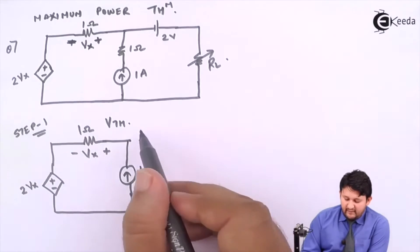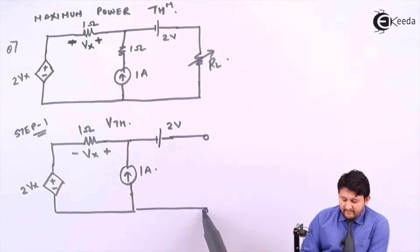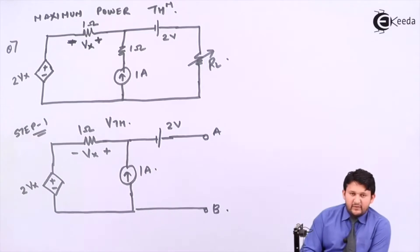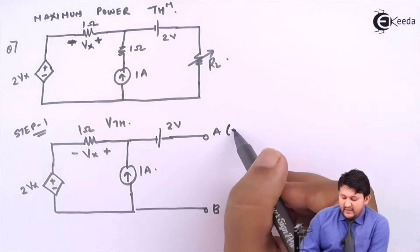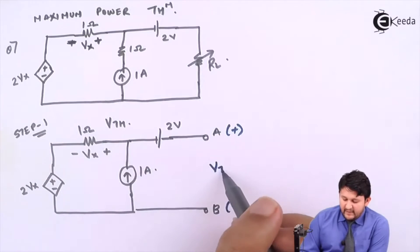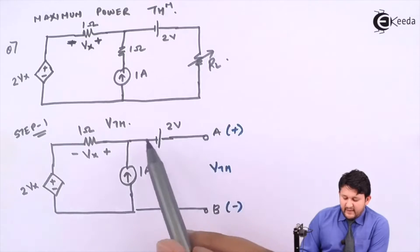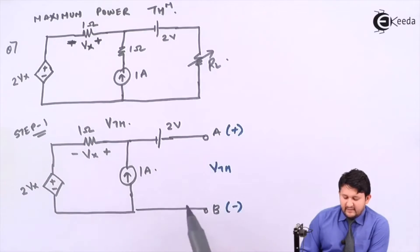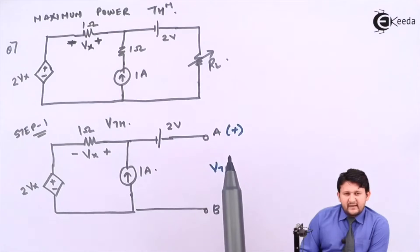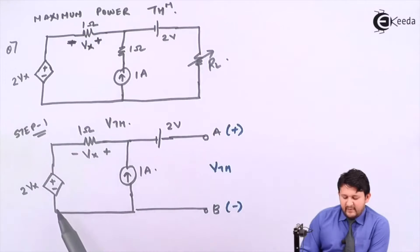The value is 1 ohm, voltage 2 volts, with terminals A and B. Since you have removed your load resistance, let's use the steps. Step number 1: A as positive, B as negative, between A and B write Vth. Step 2, Step 3: any path from A to B - first path, second path. Step 4: select the shortest path without having a current source. Your available path will be only this one.